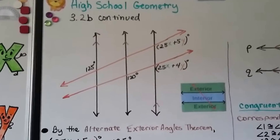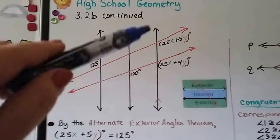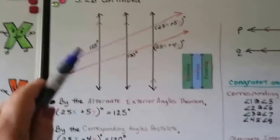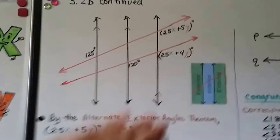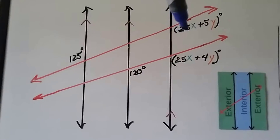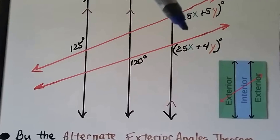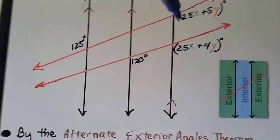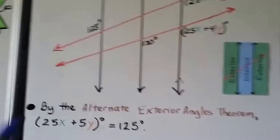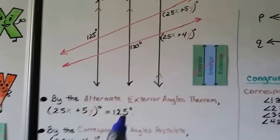Now we have three parallel lines cut by two red transversals, and the transversals are not parallel. The parallel lines are the black ones. We take one transversal at a time. The first angle is 125 degrees, and the alternate angle on the other side of the transversal is in the exterior — so these are alternate exterior angles. That gives us 25X plus 5Y equals 125 degrees by the alternate exterior angles theorem.